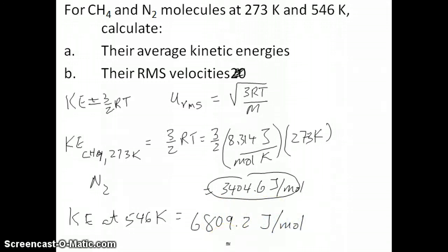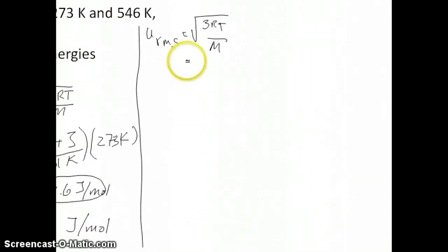Now we're going to go ahead and calculate the RMS velocity. So I'm going to do RMS velocity on this side. Just remember, this is the formula for RMS velocity where M is the molar mass of the species. So now you have two different gases, CH4 and N2. So you're going to have different molar masses.